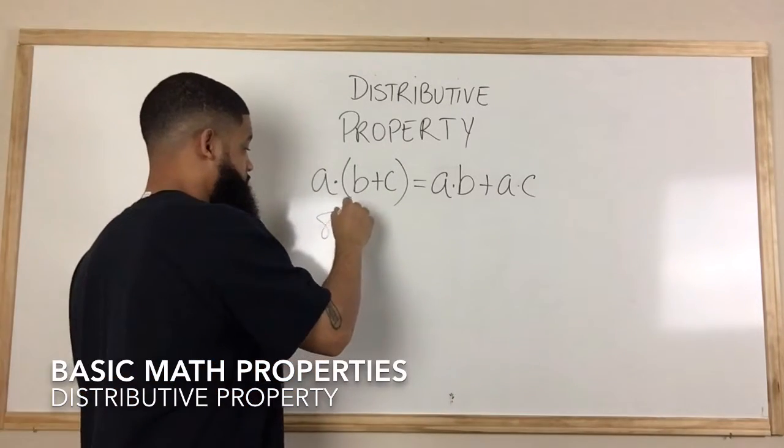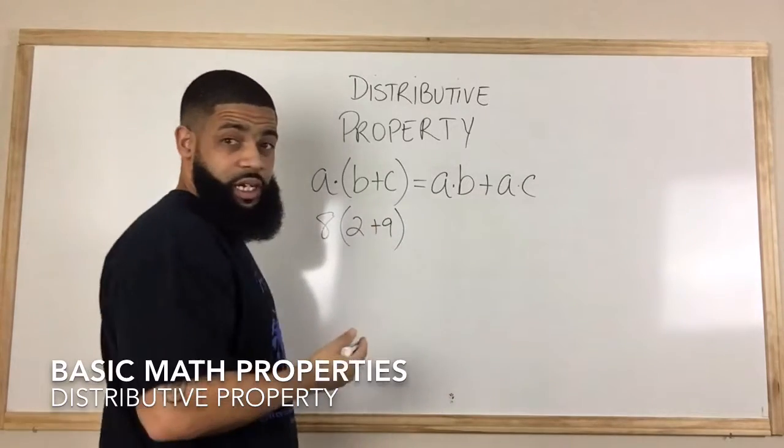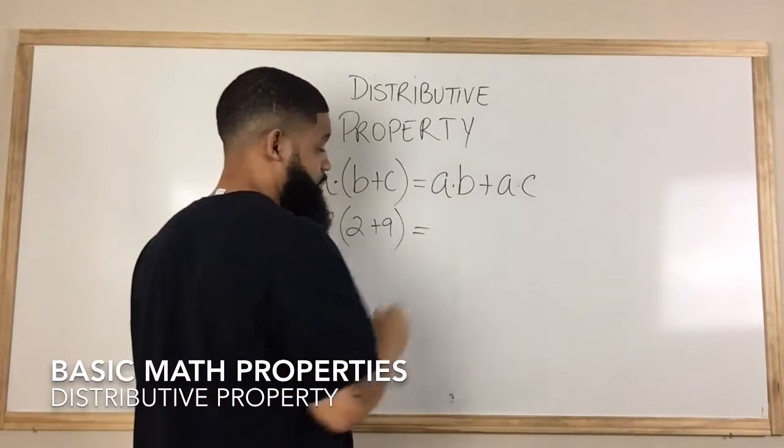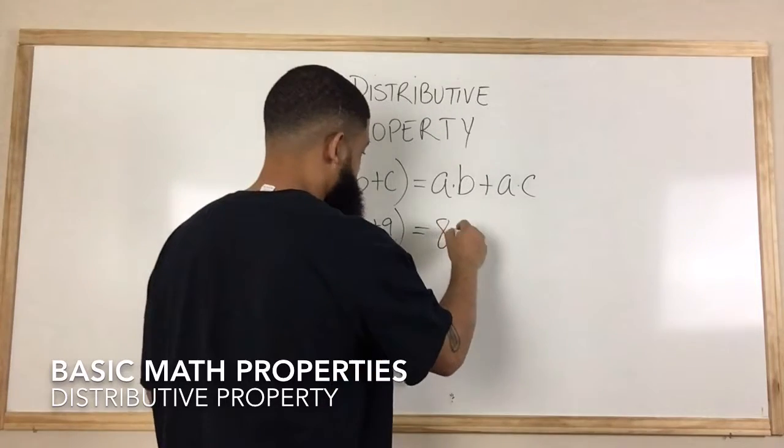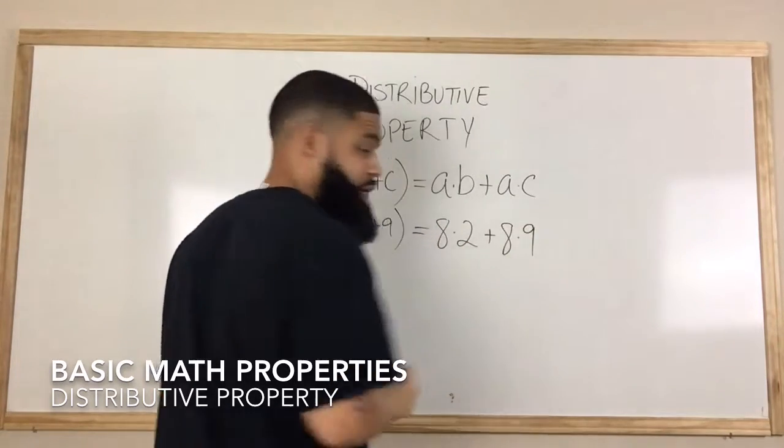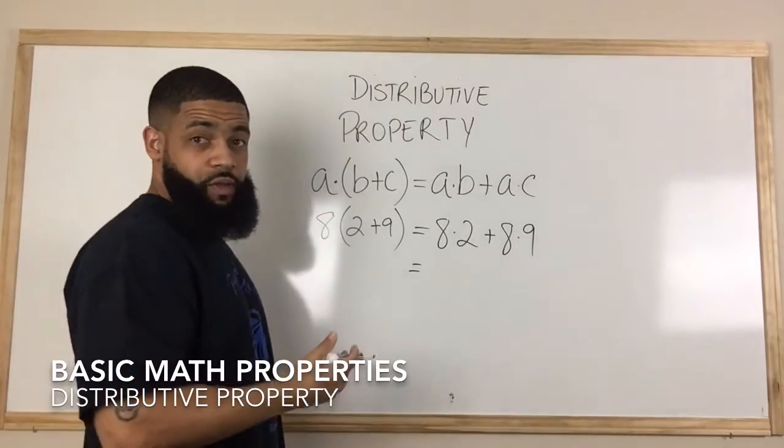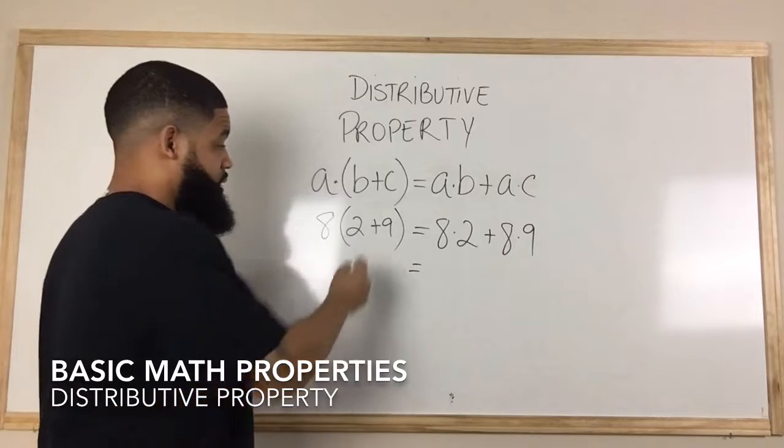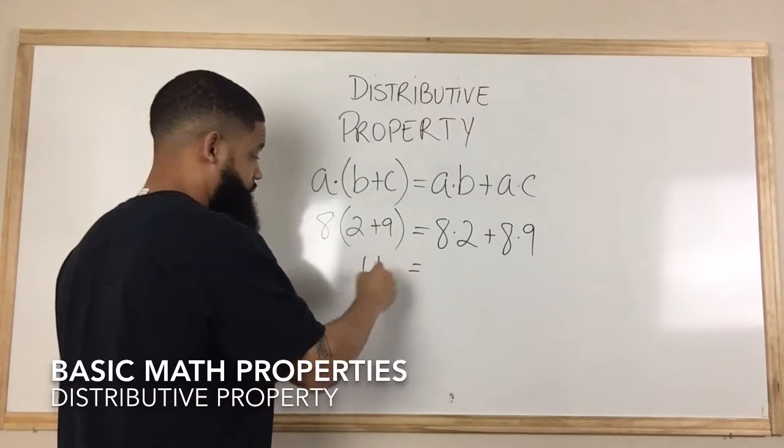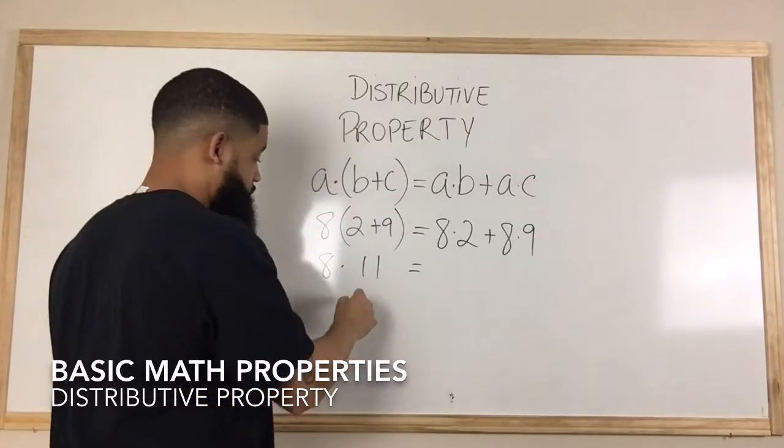For example, if I have 8 times the quantity 2 plus 9, it's going to be the same thing as 8 times 2 plus 8 times 9. On the left side, according to order of operations, we would have to add 2 and 9 first and get 11, so I would have 8 times 11.